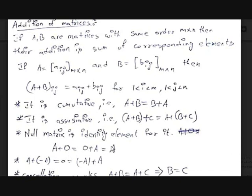A plus 0 equals 0 plus A equals A, where 0 denotes the zero or null matrix. For any matrix A there exists an additive inverse such that the sum of both matrices is 0 — the additive inverse is minus A, so A plus (−A) equals 0 equals (−A) plus A. Cancellation also works: if A plus B equals A plus C, then B equals C. This is worth noting because cancellation does not work for all concepts in mathematics — for some it will not work.